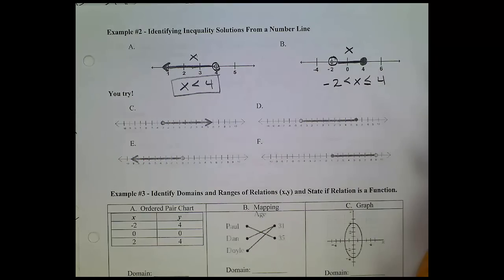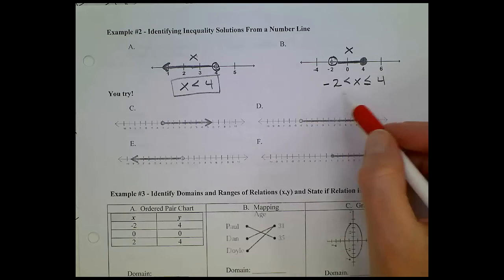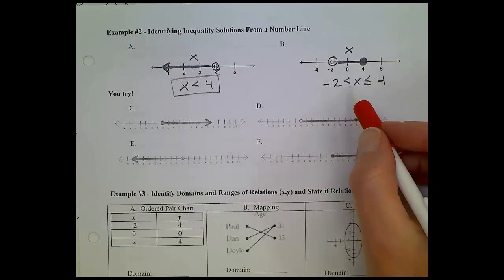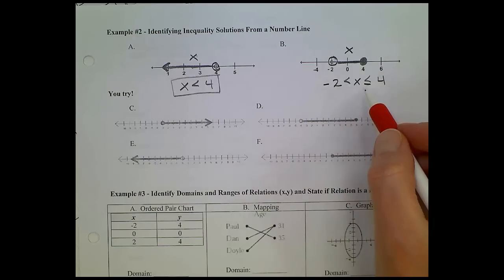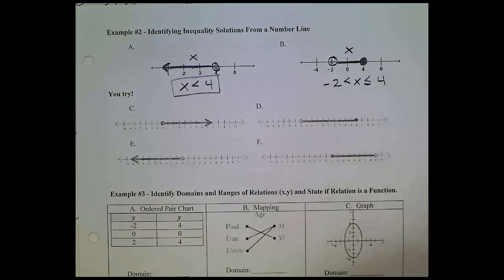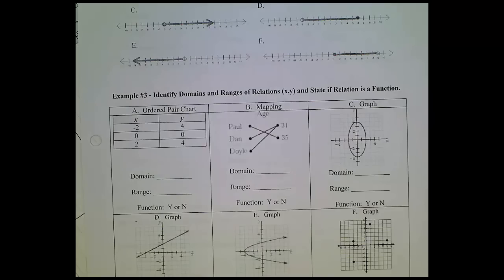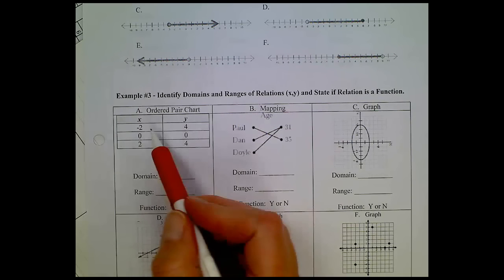Hopefully, that's not too confusing. And whenever you write it as a single inequality, two separate inequalities, as a single inequality, these should be less than signs. If you see anything other than that, question yourself, because it shouldn't make sense. Alright, let's move down, look at something we should already know. Example number 3, letter A. We've seen these ordered pair charts before.